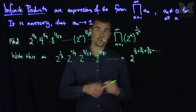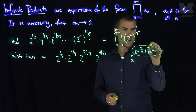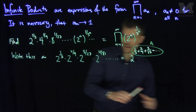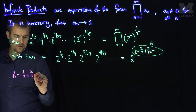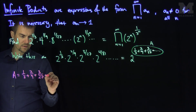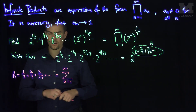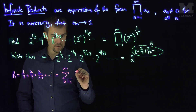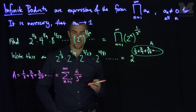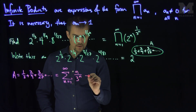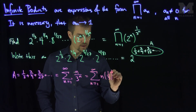Now I have to evaluate this infinite series to find the exact exponent. Let's call that exponent a. So a equals one-third plus two-ninths plus three over twenty-seven, and so on — that is, the sum as n goes from one to infinity of n over three to the n. We can write this as the sum as n goes from one to infinity of n times one-third to the n.